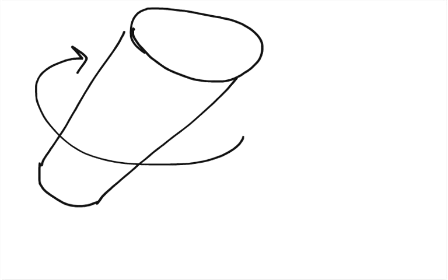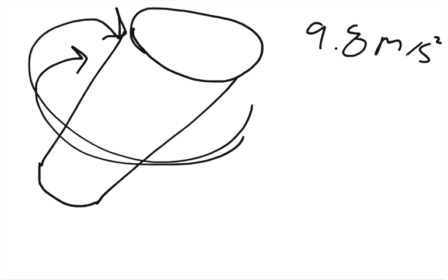What angular speed must such a cylinder have so that the centripetal acceleration at its surface equals the free fall acceleration on Earth? So on Earth we have a 9.8 meters per second squared free fall acceleration. How fast does this thing need to be rotated in order to get a centripetal acceleration of 9.8 meters per second squared?